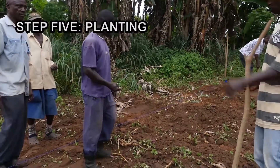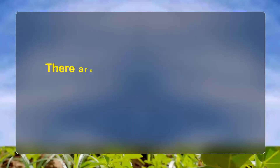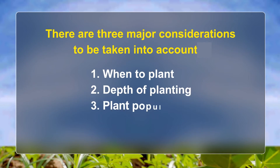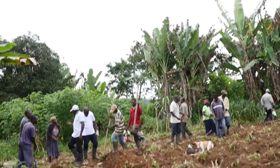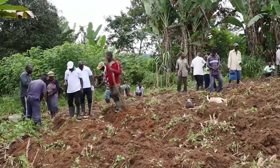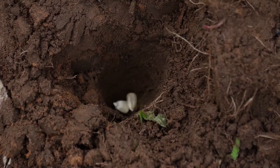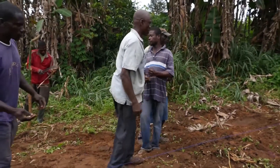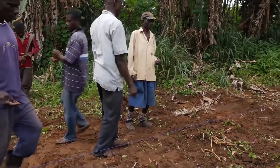Step 5: Planting. There are three major considerations: when to plant, depth of planting, and plant population. Planting can be done either mechanically or manually by hand. Planting is generally recommended at the onset of rain. However, since pioneer hybrid maize is drought resistant, dry planting can be done when rain is expected.